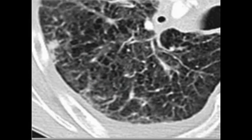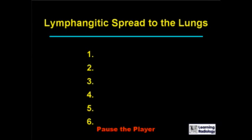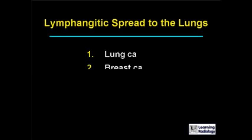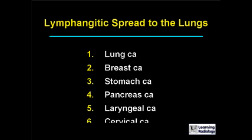The next differential is for lymphangetic spread to the lungs. There are six causes: lung cancer, breast cancer, stomach carcinoma, pancreas carcinoma, laryngeal carcinoma, and cervical carcinoma.